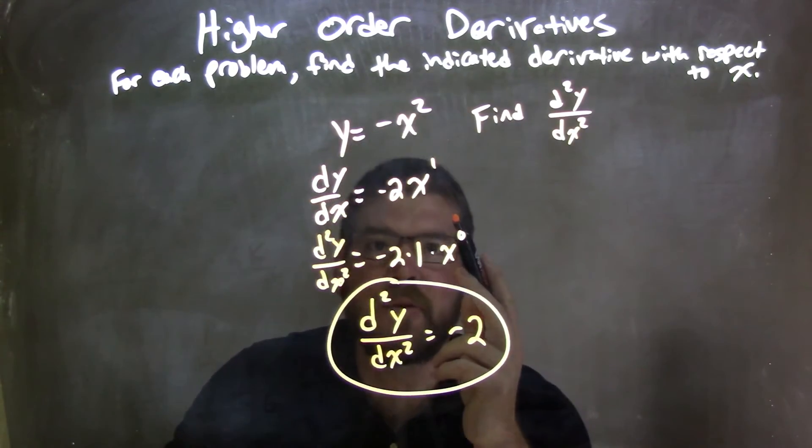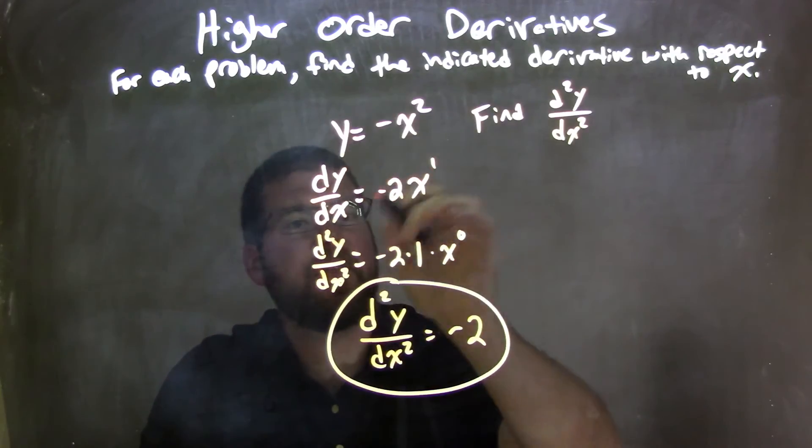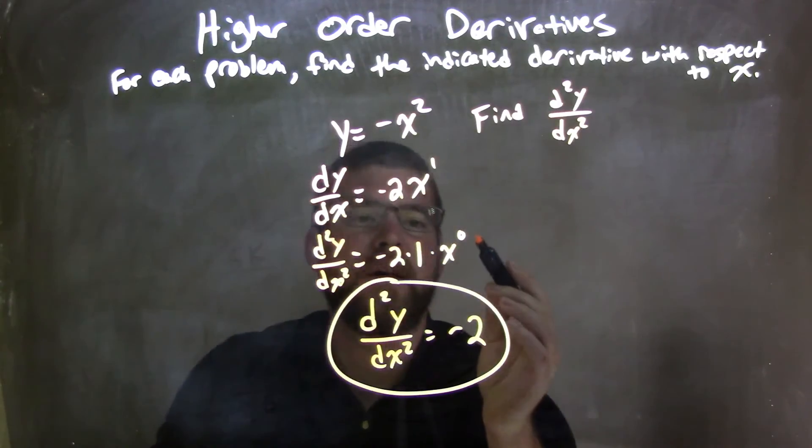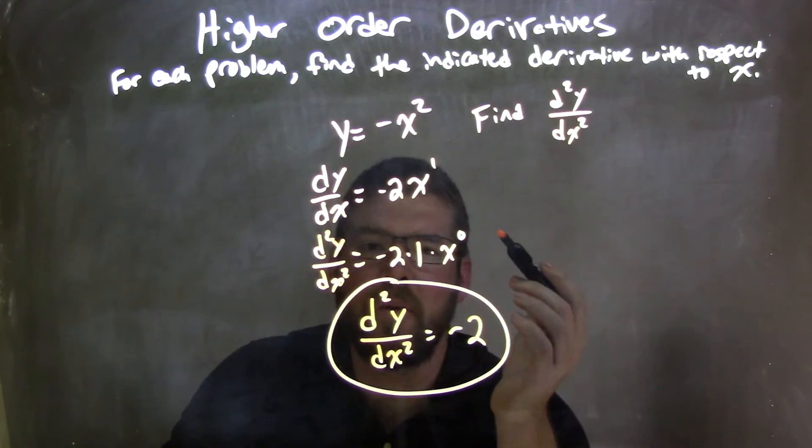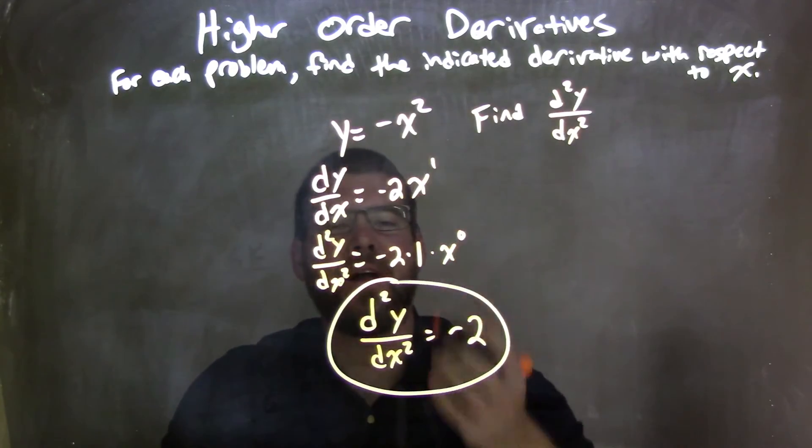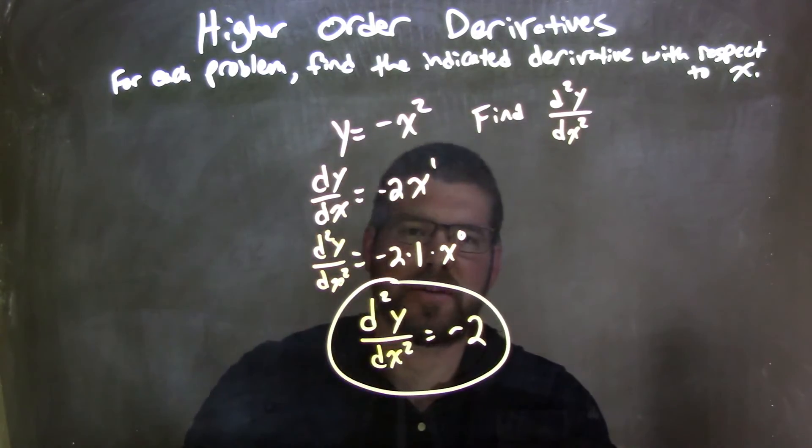Then from there, I found the second derivative using this function. Again, power rule—the 1 came down. We subtract the exponent by 1, giving us x to the 0 power, which we know is 1. And negative 2 times 1 times 1 is negative 2. So our final answer is the second derivative is negative 2.